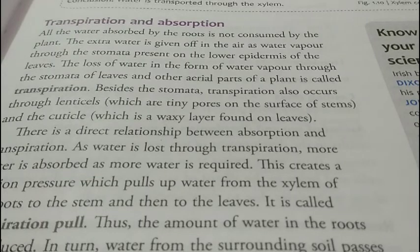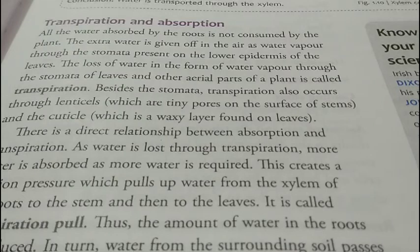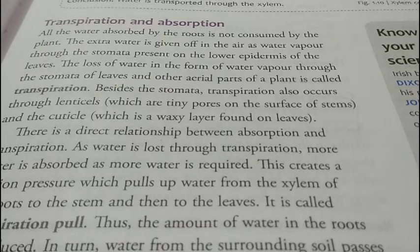Transpiration के तीन प्रकार हैं: Stomatal transpiration — stomata पत्तों में पाए जाने वाले छोटे-छोटे pores हैं, जो ventral side में ज़्यादा और dorsal side में कम होते हैं — stomata के through transpiration सबसे ज़्यादा होता है। दूसरा है Lenticular transpiration, जो lenticels से होता है — lenticels tiny pores हैं जो stems में पाए जाते हैं और always open रहते हैं क्योंकि they are dead cells।